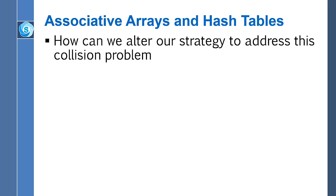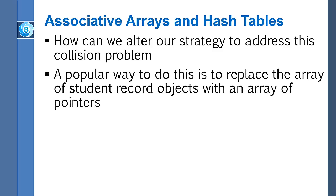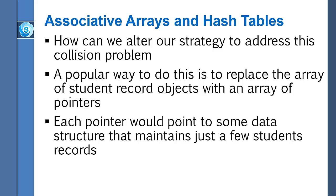Unless we alter the strategy a little bit. What if instead of an array of 1,000 student records, we made it an array of 1,000 pointers, where each pointer could point to a small data structure? That small data structure would maintain all the student records that correspond to that position — all the records that get hashed to that particular index. If we don't have too many collisions, only a few students would need to be maintained in each structure.